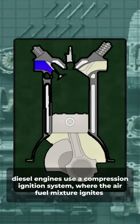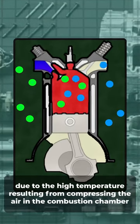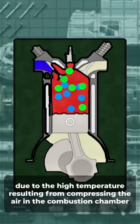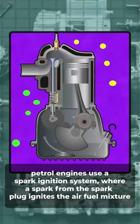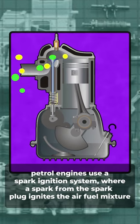Diesel engines use a compression ignition system, where the air-fuel mixture ignites due to the high temperature resulting from compressing the air in the combustion chamber. Petrol engines use a spark ignition system, where a spark from the spark plug ignites the air-fuel mixture.